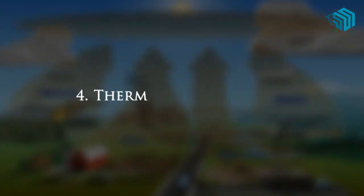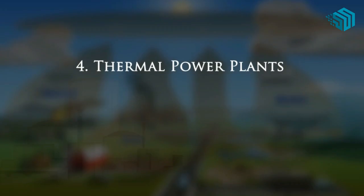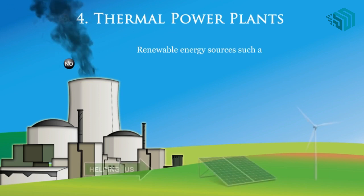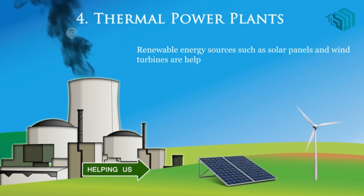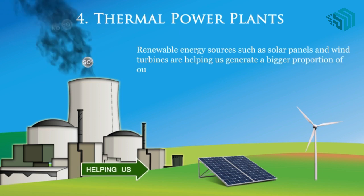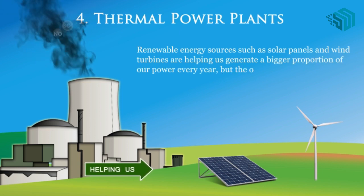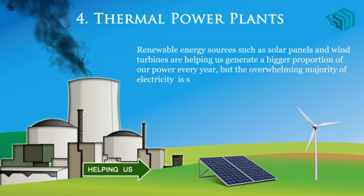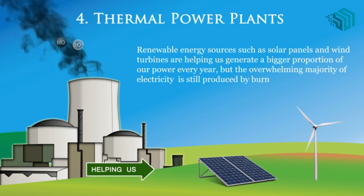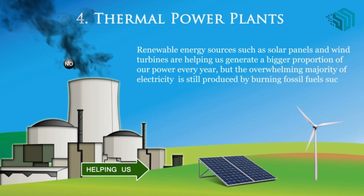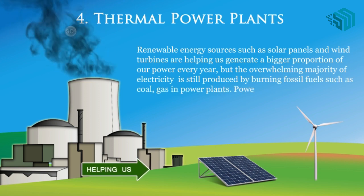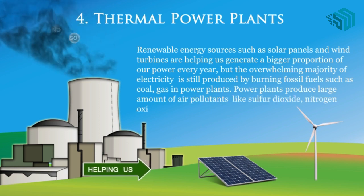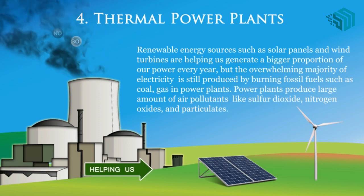4. Thermal power plants — renewable energy sources such as solar panels and wind turbines are helping us generate a bigger proportion of our power every year. But the overwhelming majority of electricity is still produced by burning fossil fuels such as coal and gas in power plants. Power plants produce large amounts of air pollutants like sulfur dioxide, nitrogen oxide and particulates.